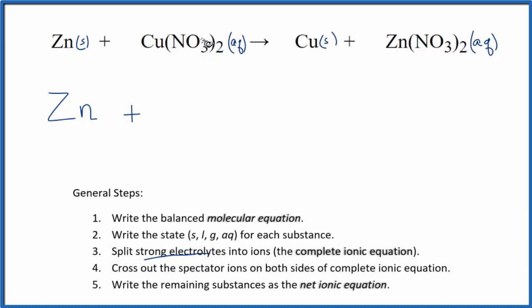For copper(II) nitrate, nitrate is a polyatomic ion with a negative charge. We have two nitrates (1 × 2), so copper must be 2+ to balance the two negative charges.